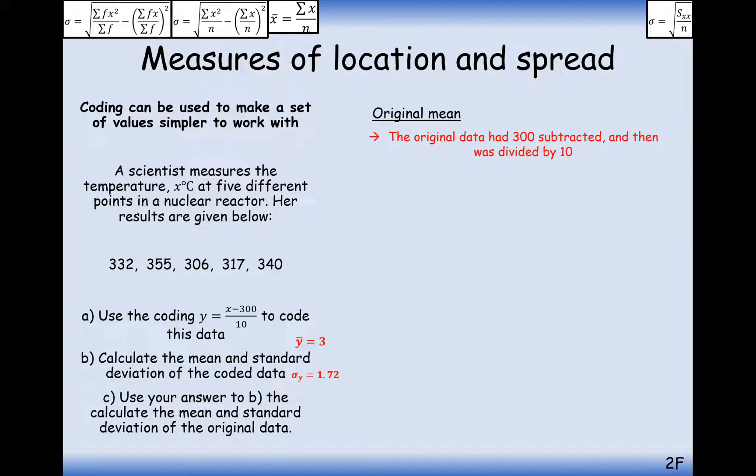Okay, now how do we convert back? So the original mean, with the original data, we subtracted 300 and then divided by 10. So what we've got to do to reverse this is first multiply by 10, and then subtract, and then add on 300. So it's going to be 3 times 10 to undo the coding, and then it's going to be add 300 after that. So the mean of this set of data is 330.